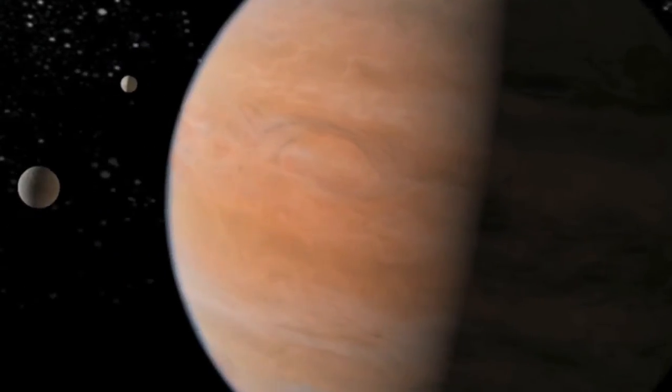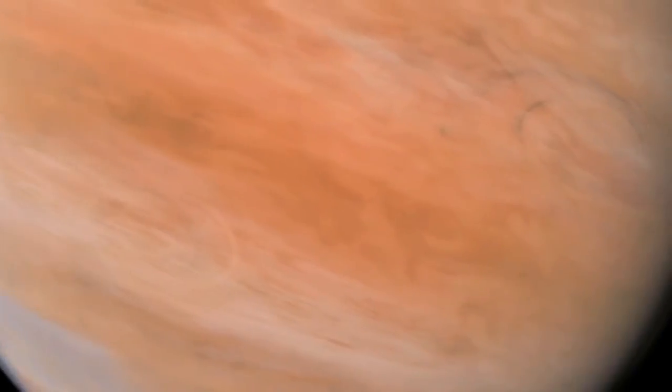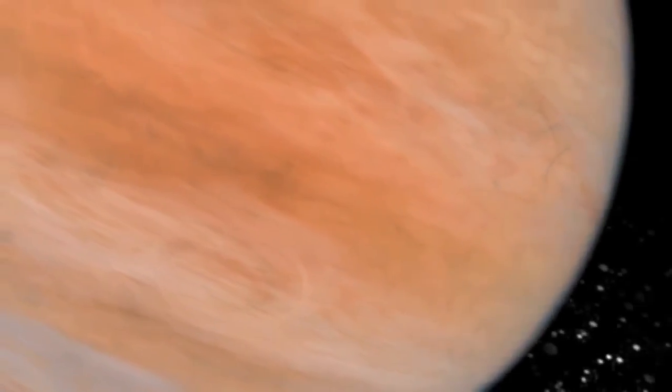The first five worlds discovered by Kepler were unceremoniously named Kepler-4b, 5b, 6b, 7b and 8b.